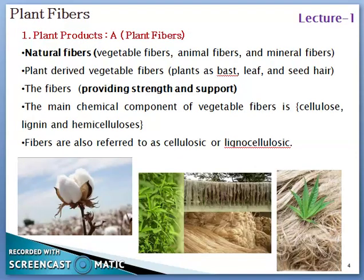We will start with plant fibers as plant products. These natural fibers are mainly obtained from vegetable, animal, and mineral sources and have a huge commercial market globally. They are imported, exported, and used in various domestic and pharma industries. The global economy is mainly maintained by these natural fibers derived from plants. The plant-derived vegetable fibers include bast, leaf, and seed hairs. The fibers provide strength and support to the plant. The main chemical constituents of vegetable fiber are cellulose, lignin, and hemicellulose. Lignin is a type of pigment present in plant fibers, and plant fibers are also referred to as cellulosic or lignocellulosic fibers.